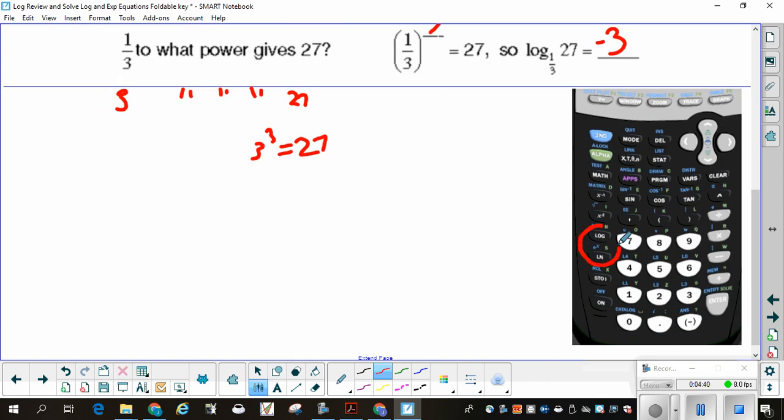Right here is your log and natural log button. If you have a log that doesn't have a base listed, you can use the log button. Natural log is log base e. If you have a different one, you can click math and scroll down until you see log base. It will bring up log and then a little box here and a bigger box here. You simply fill in whatever your base is and whatever your value is.